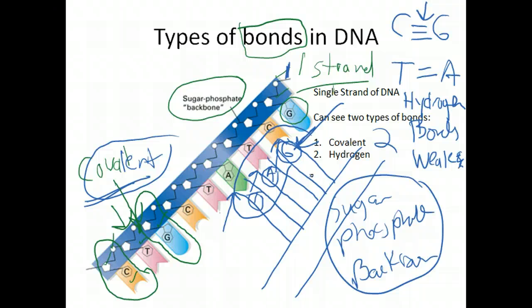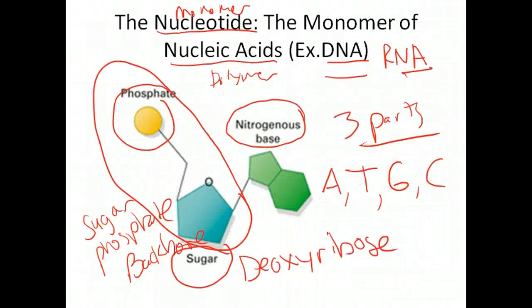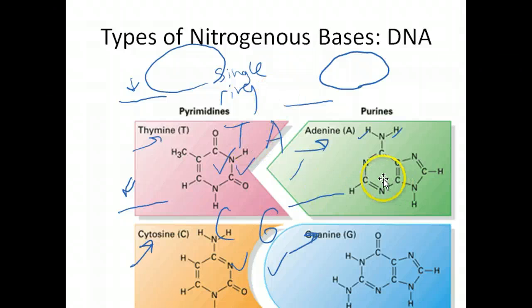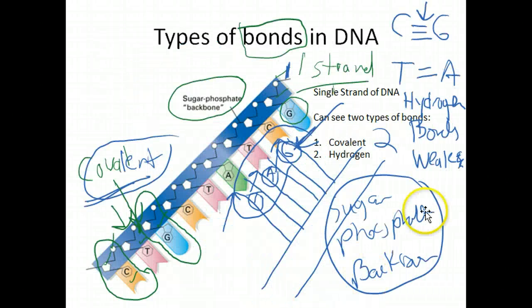That's all we have for this screencast. For this one, we covered the structure of DNA. I really want you to understand the structure of the nucleotide—the three components shown here—and the differences between the various nitrogen containing bases and how they all come together to make this double-stranded DNA molecule. In the next section, we'll talk about DNA replication.